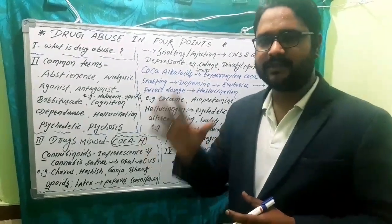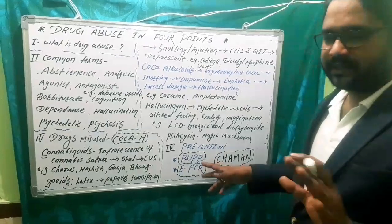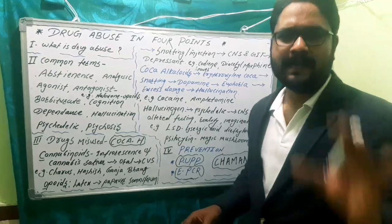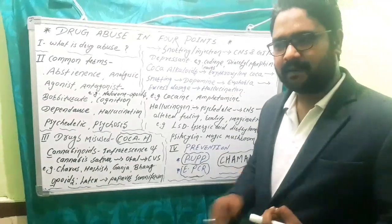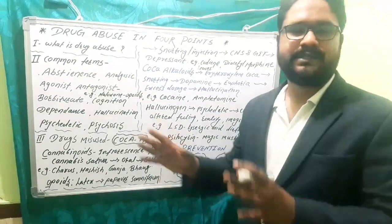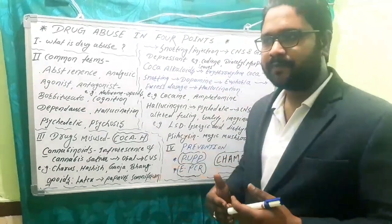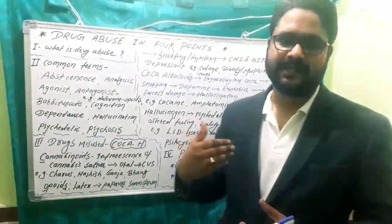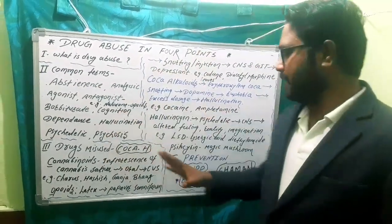The best approach is education and prevention among teenagers and adolescents. For prevention, we use two shortcuts: PUP and EPCR. PUP means parenting without undue peer pressure — every child should be respected as a unique individual with their own capabilities. We should not stress children to achieve certain successes that may be too difficult. Peer pressure should not come from parents or family.